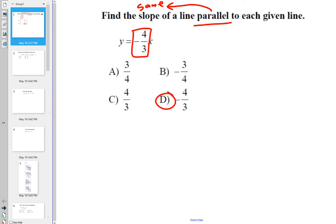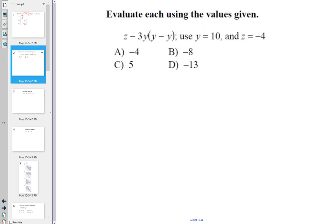Parallel means same slope. So, evaluate using the values given. Just plug in a 10 for y and a negative 4 for z. So negative 4 minus 3 times 10, and then y minus y is 10 minus 10. What's anything minus 0? 0. What's anything times 0? So that knocks out all of those. You're only left with v, so you're going to make it 4.